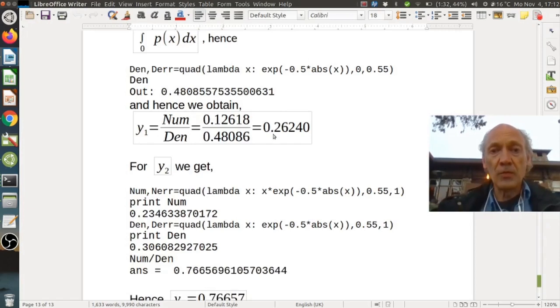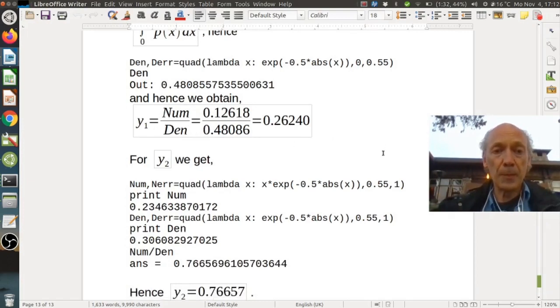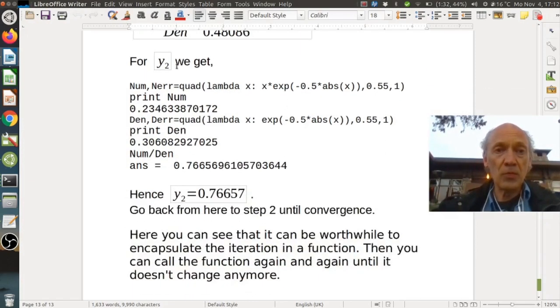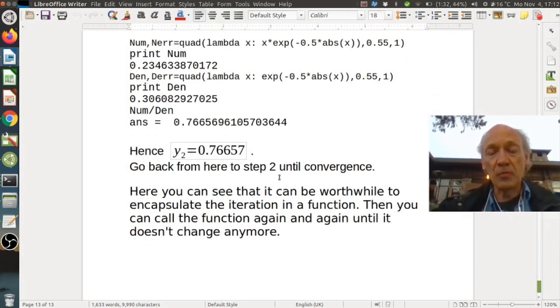Here we just need to integrate over the probability itself again using quad. So here we again have this function but not with x, just with exponential and we get 0.48 and so on. Hence we can plug in the two numbers here and we get the result 0.26 for our reconstruction value y_1. Similar for y_2 we use quad again. We get the corresponding values for this upper interval now. And here's the reconstruction value y_2. It's 0.76. Right and so on. So I don't want to continue and finish it here.